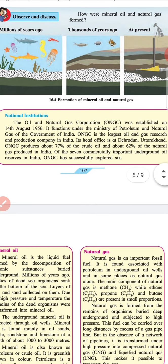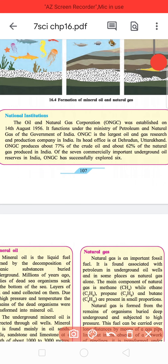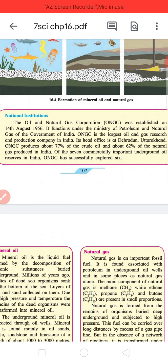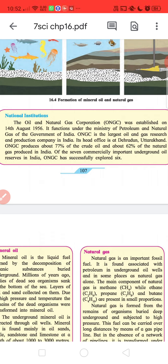National Institution: The Oil and Natural Gas Corporation was established on 14th August 1956. It functions under the Ministry of Petroleum and Natural Gas of the Government of India. ONGC is the largest oil and gas research and production company in India. Its head office is at Dehradun, Uttarakhand. ONGC produces about 77% of the crude oil and about 62% of the natural gas produced in India. Of the 7 commercially important underground oil reserves in India, ONGC has successfully explored 6.